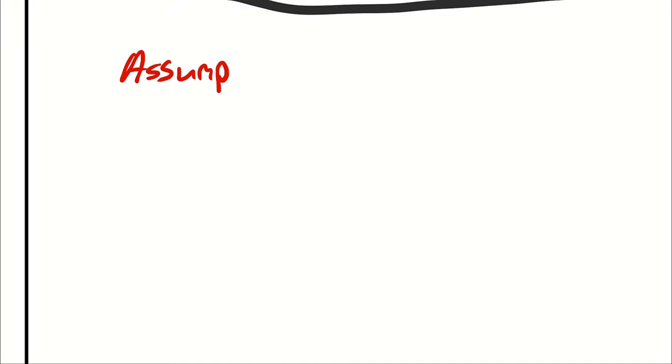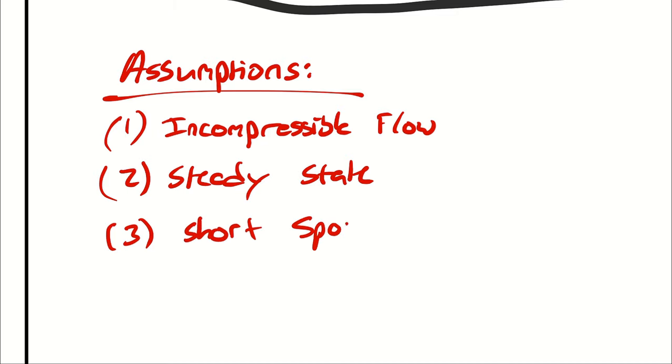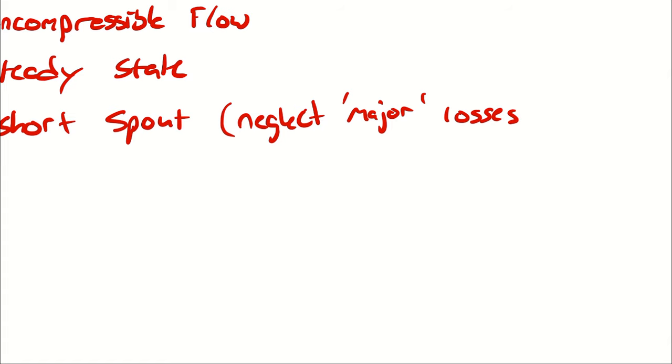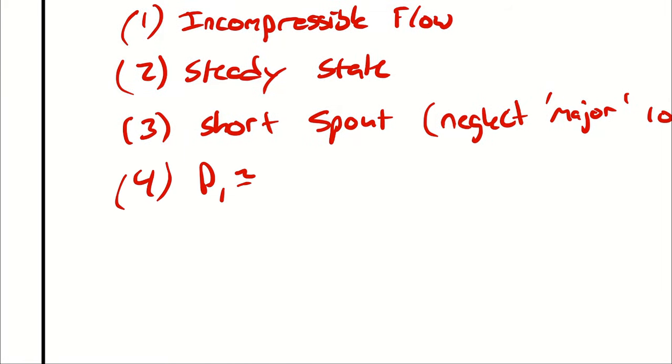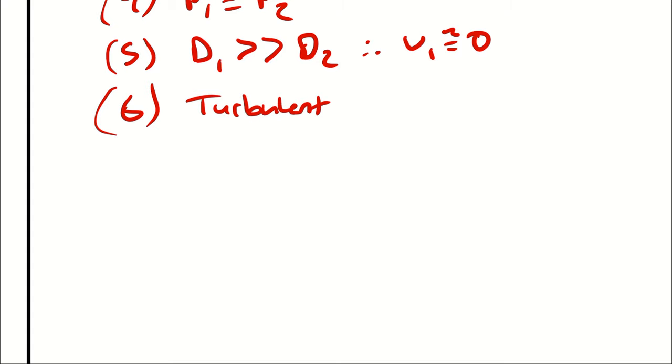Just for the sake of being complete, let me formalize my list of assumptions. I had incompressible flow, flowing steadily. I had a short spout, meaning that I could neglect major losses. I assumed P1 was pretty close to P2. I assumed D1 was much, much greater than D2. Therefore, V1 is approximately 0. And then I had assumed turbulent flow until it checked out.